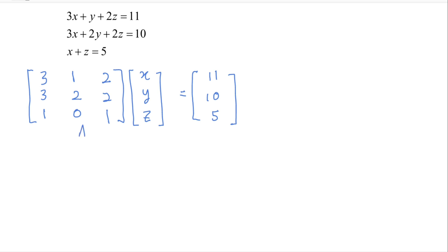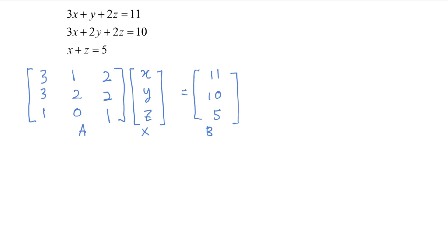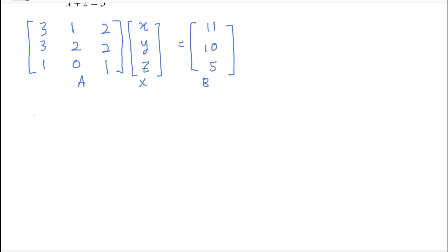Here is the matrix A, matrix X, and matrix B. Then for the second step you need to find the A inverse by using adjoint method.